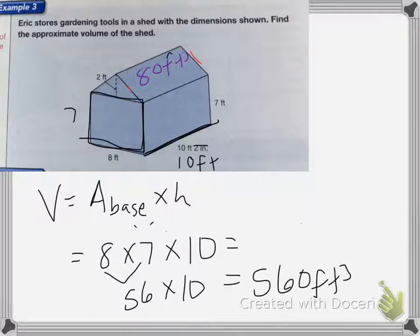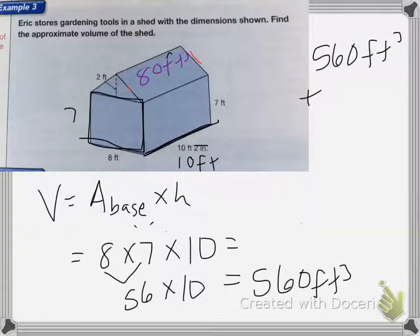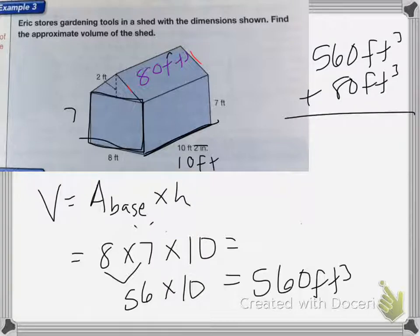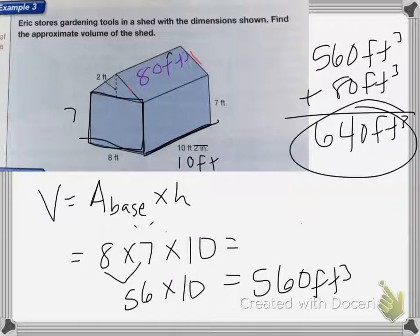So now I'm going to add 560 feet cubed plus 80 feet cubed, and I end up with 640 feet cubed for the volume of my entire shape. And that's it for this lesson.